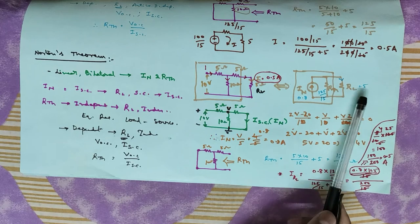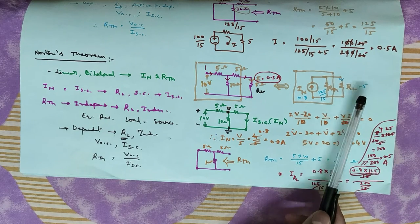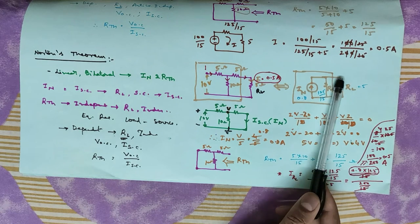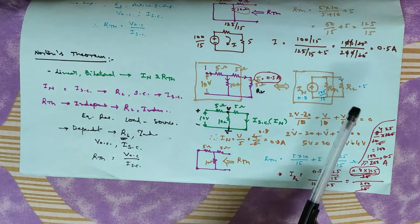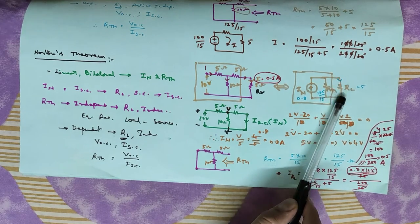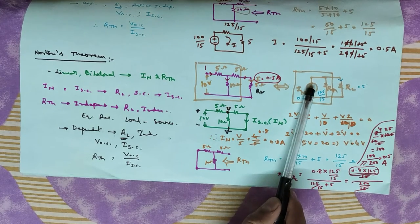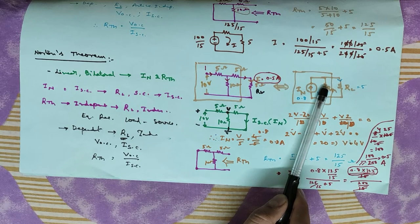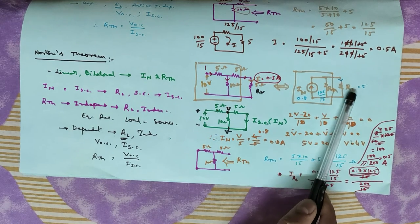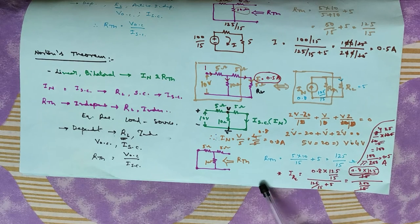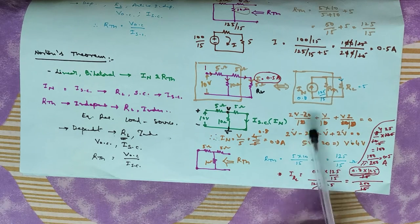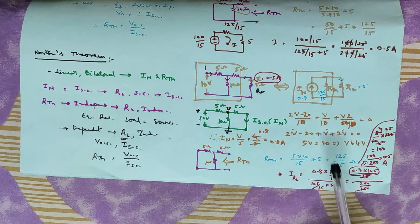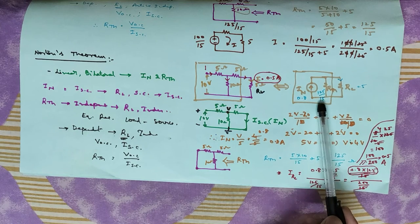RL is given as 5 ohms. To find the current through RL, we apply the current division principle. The current through a resistor equals the total current multiplied by the opposite resistor, divided by the sum of the two resistances. So, current through RL equals ISC multiplied by RTH, divided by (RTH plus RL) — that is, (125/15) divided by ((125/15) plus 5).